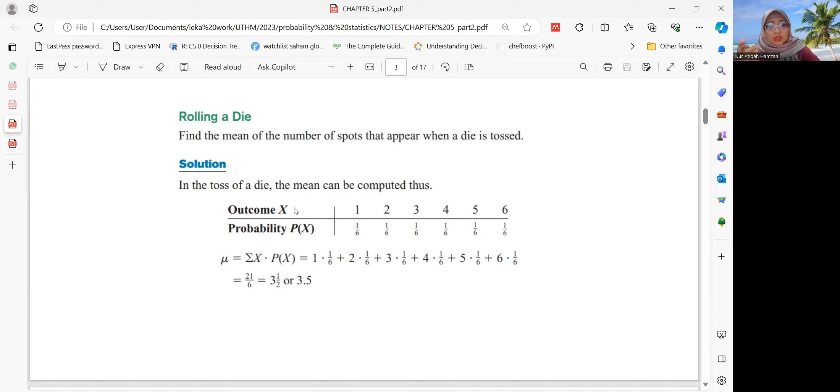So to find the mean, find the mean of the number, we use summation of x times P(x). So 1 times 1 over 6 plus 2 times 1 over 6 and so on and so forth. The value that we get is 21 over 6 or 3 and 1 half. You can also write your answer in decimal, so 3.5.